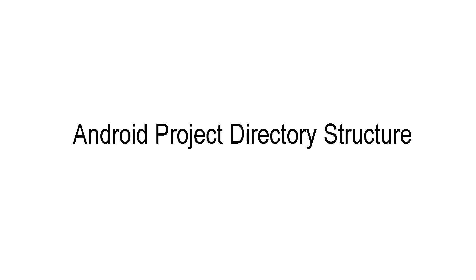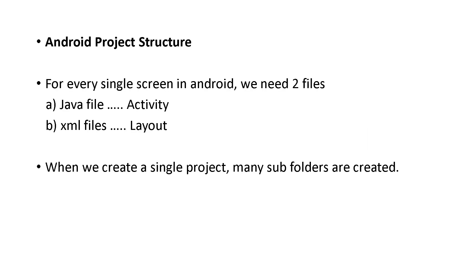Today let's see the Android project directory structure. For every single screen in Android we need two files. The first one is a Java file and the second one is an XML file. The Java file is called the activity file and the XML file is called the layout file.